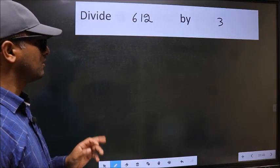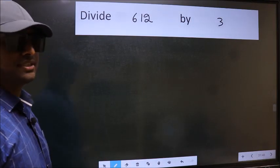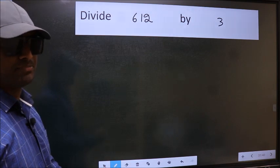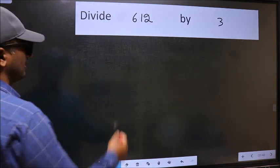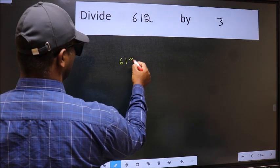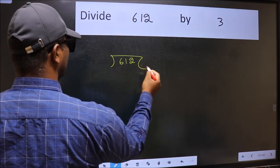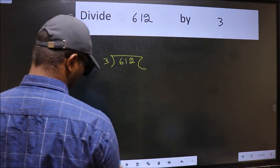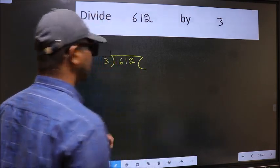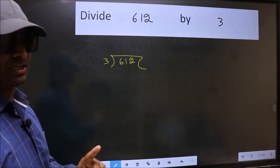Divide 612 by 3. To do this division, we should frame it in this way. 612 and 3 here. This is your step 1.